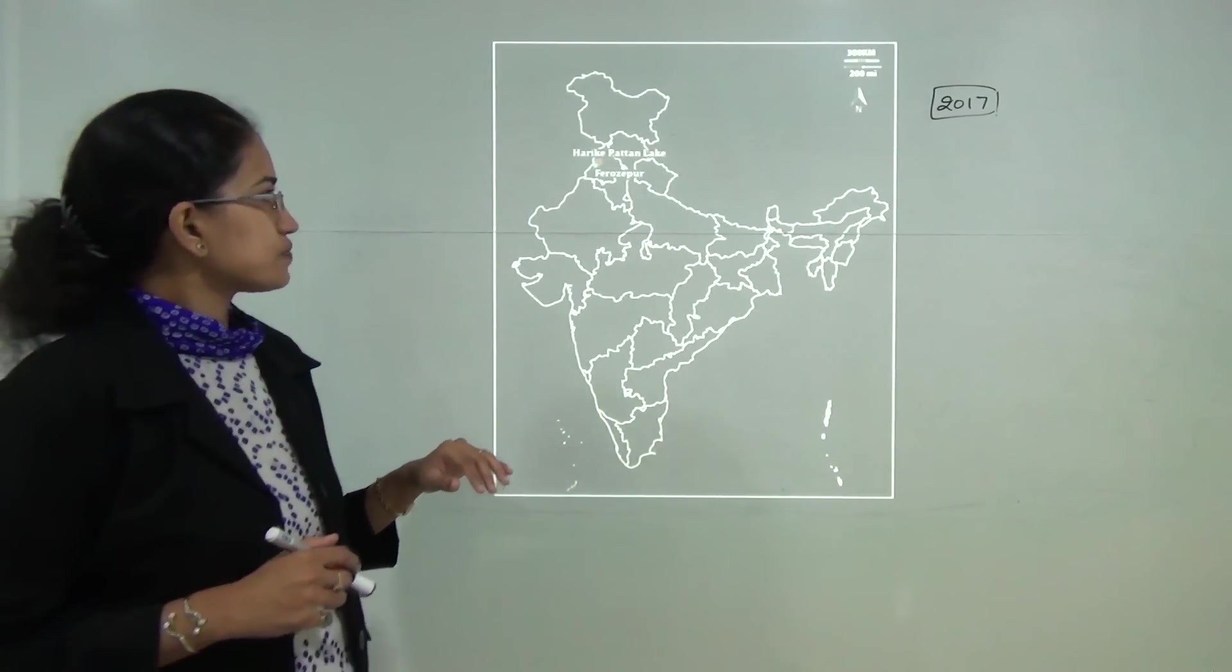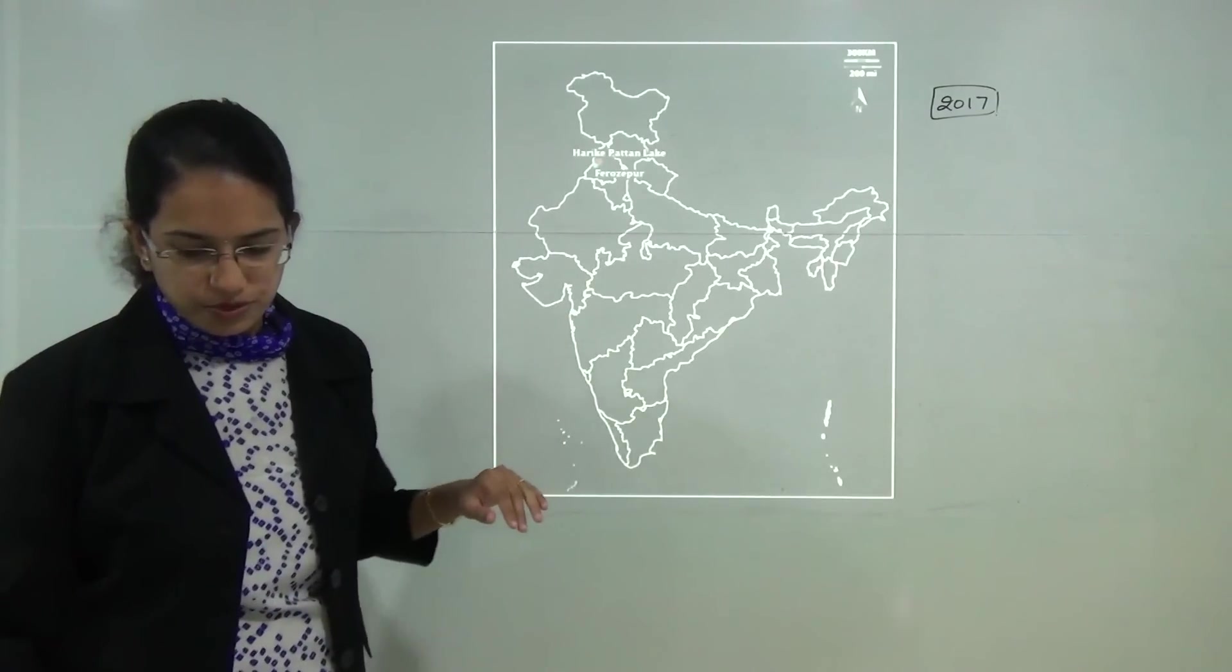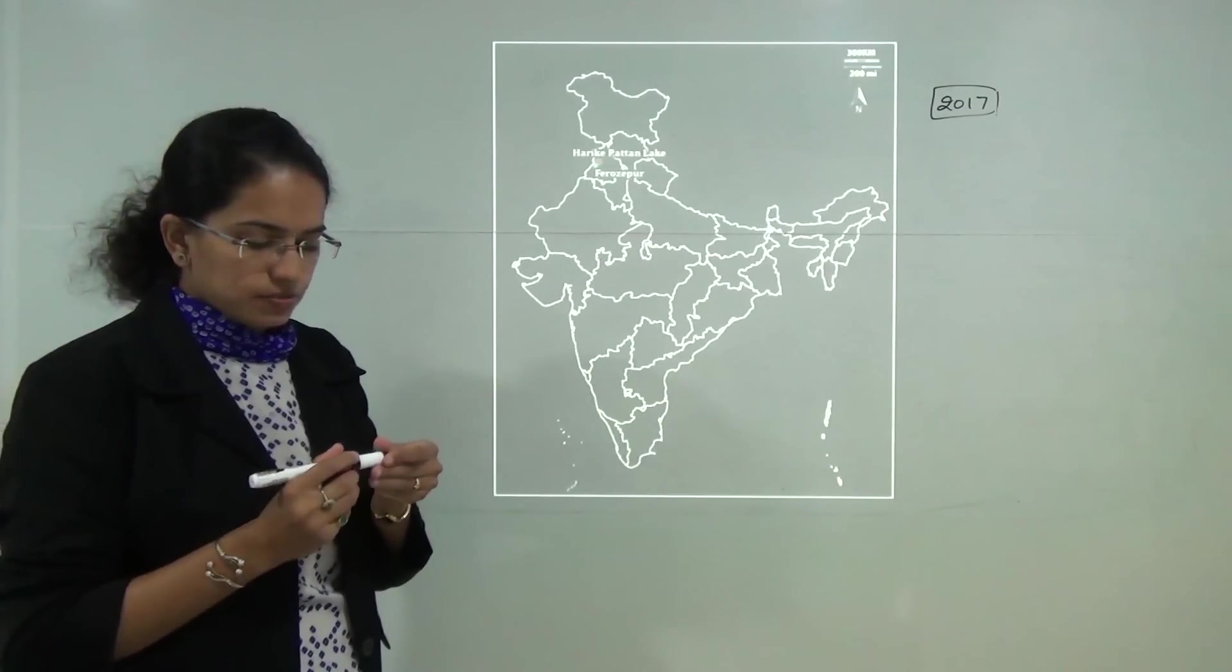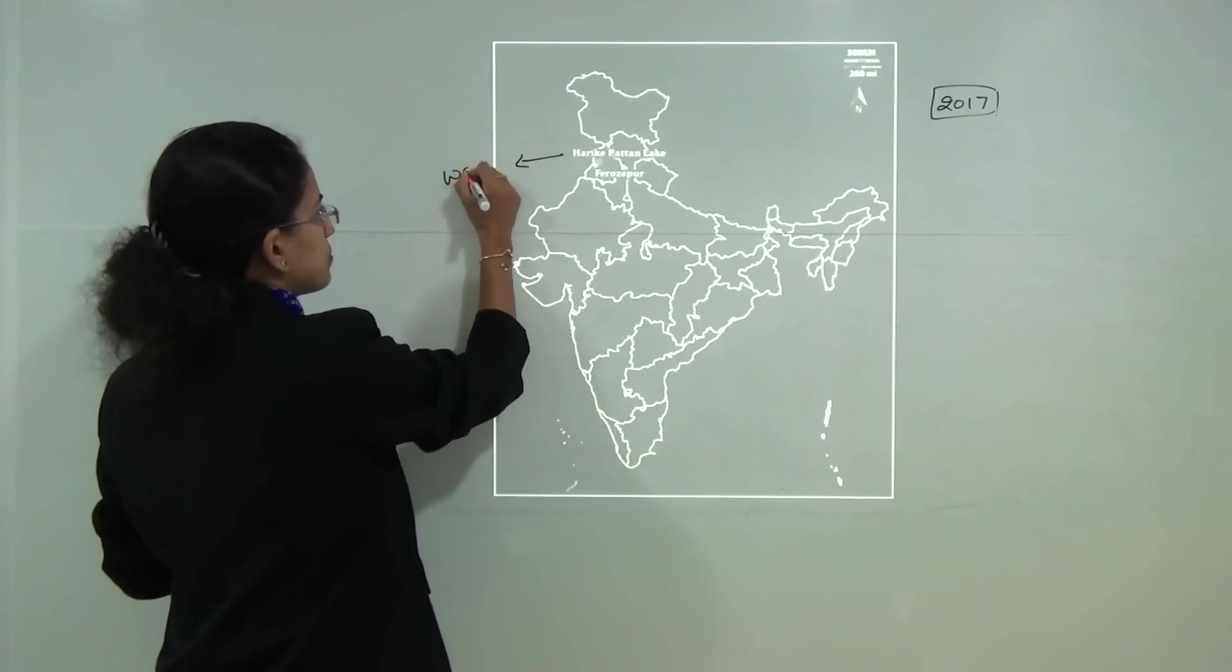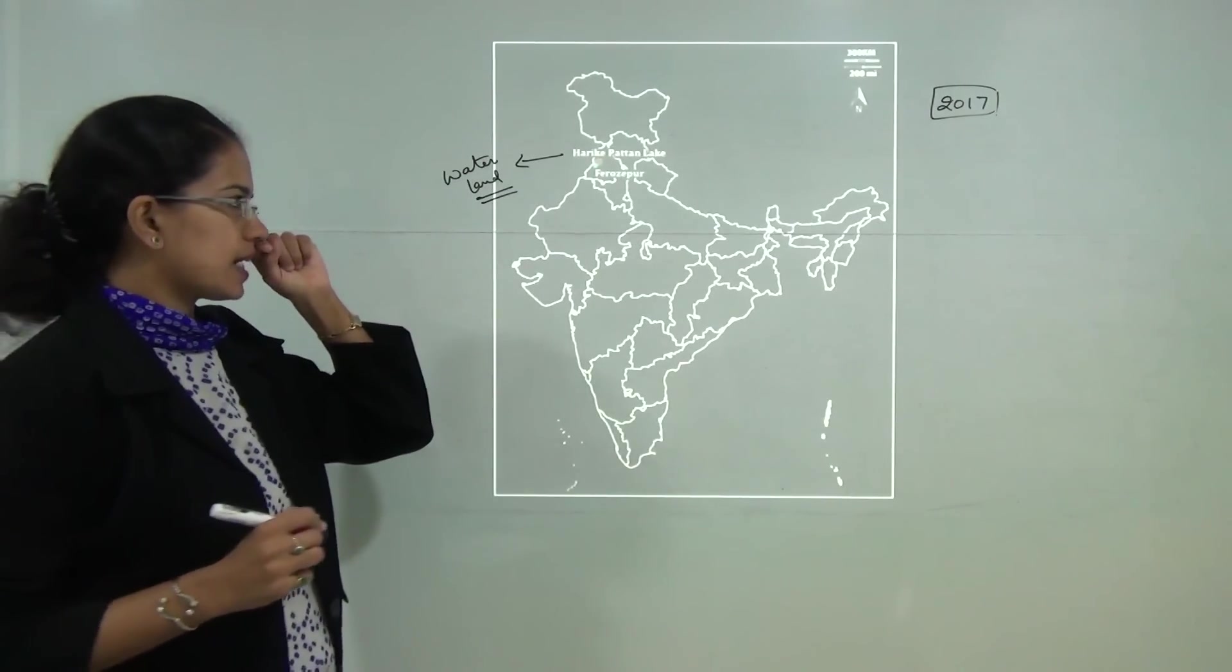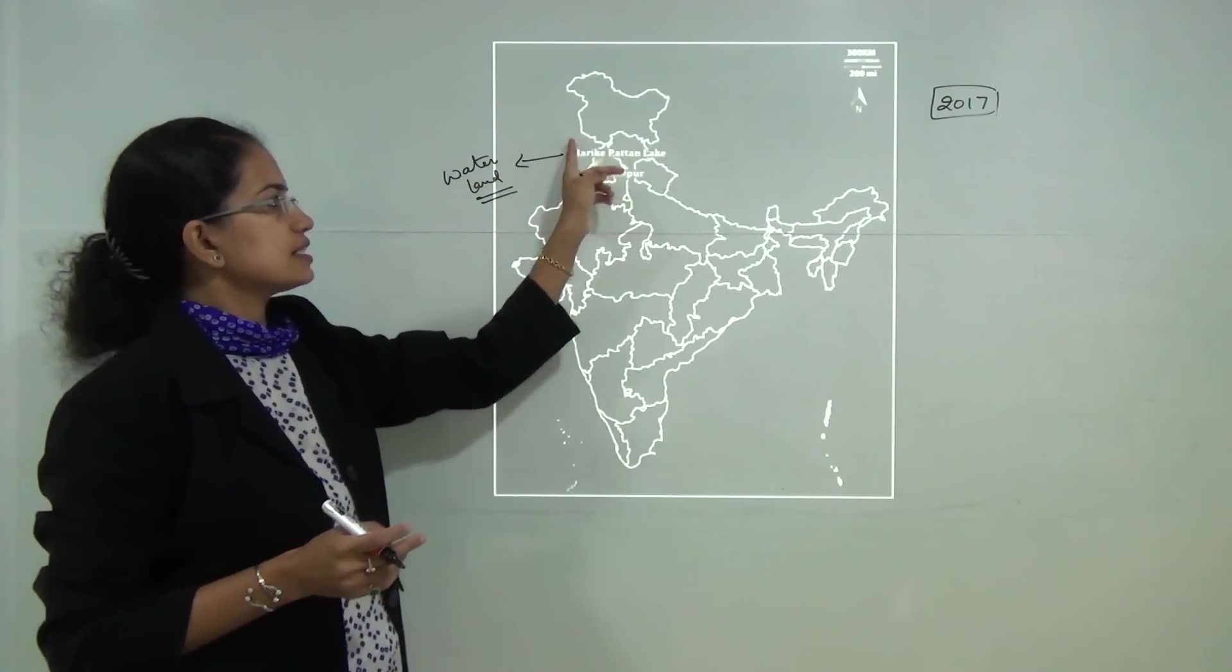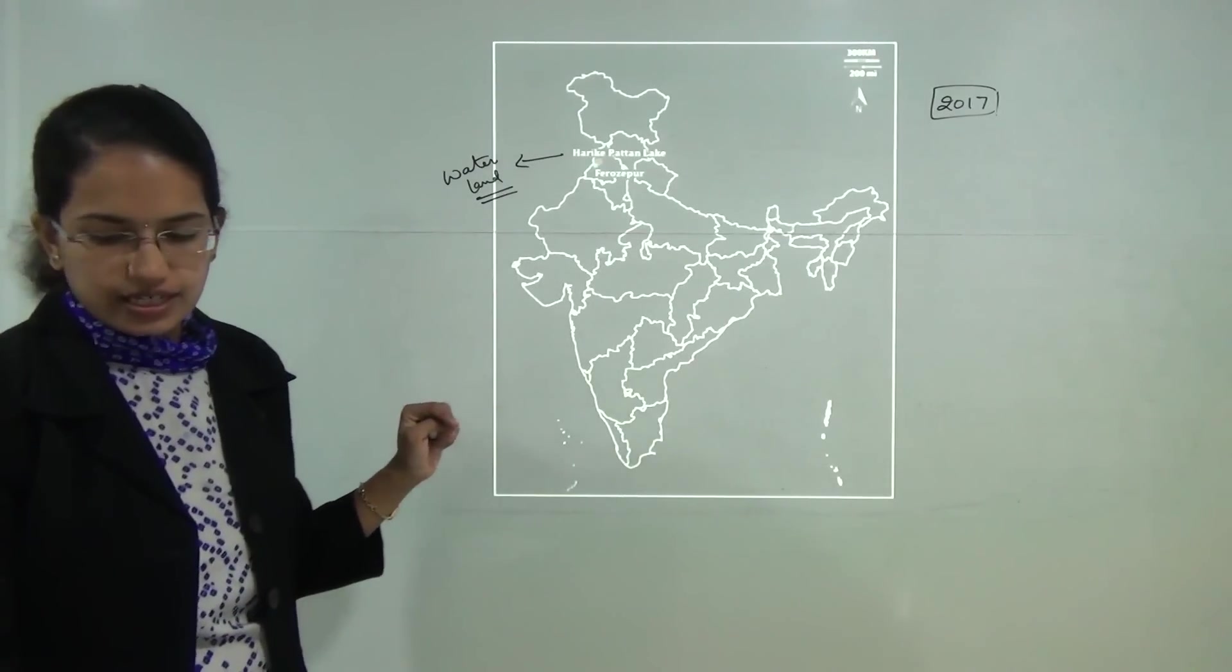Next is Harikpathan lake and Ferozpur. Ferozpur was in news because India's first amphibious bus project has been launched here. Amphibious bus means the bus that would be able to move both on water and land. It's the first of its kind amphibious bus project that has been released in Ferozpur in Punjab and this is focused on the lake which is the Harikpathan lake here.